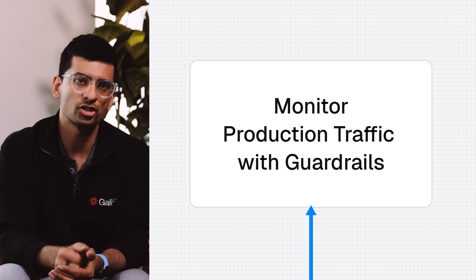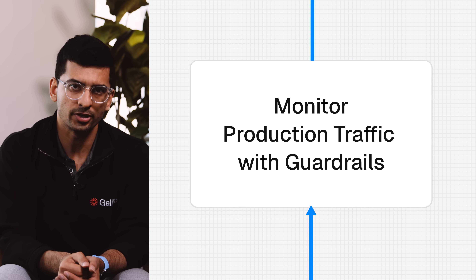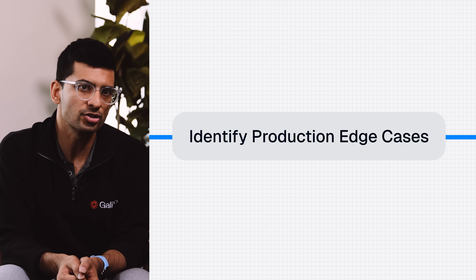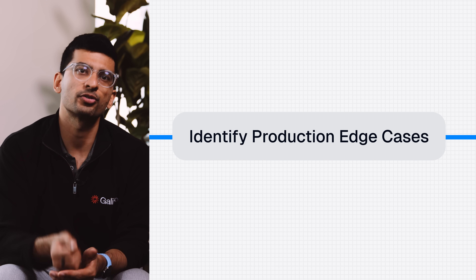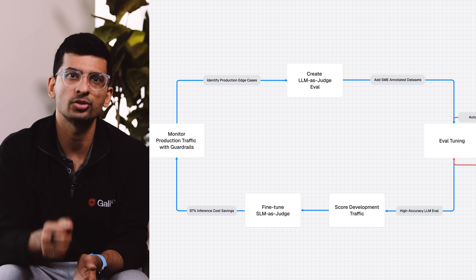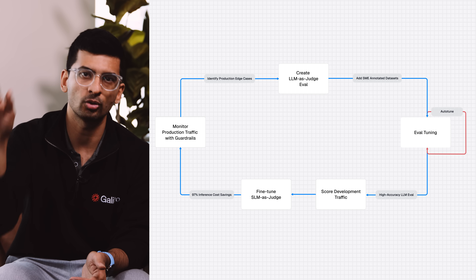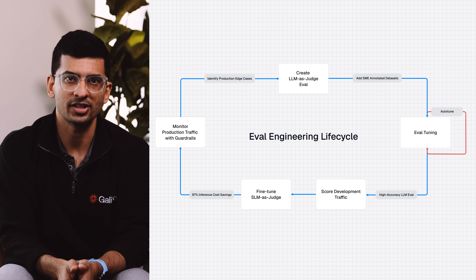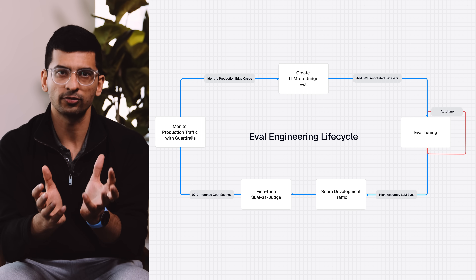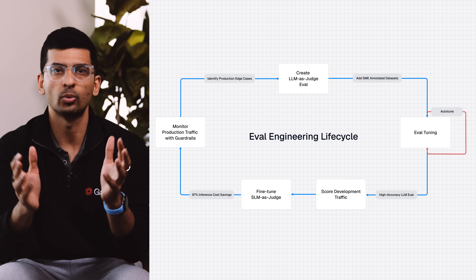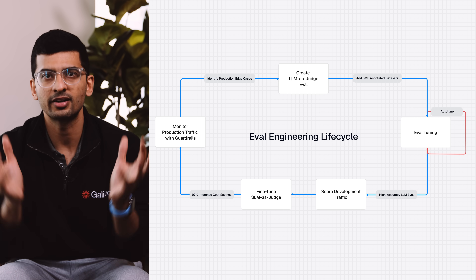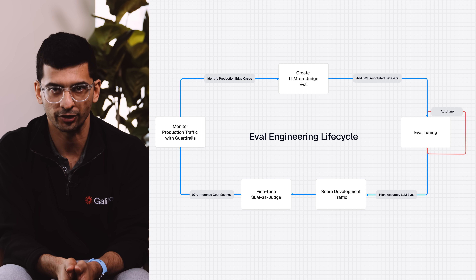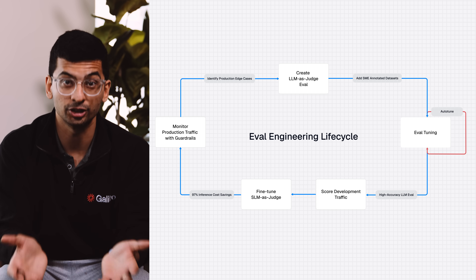When you put this SLM as a judge in production, things will fail because the world is constantly changing. When you discover new failure modes, you feed them back into the LLM as a judge to further refine the prompt, and the whole cycle continues. We call this the eval engineering lifecycle — it's not a one-and-done exercise, but an entire lifecycle you go through over and over again.